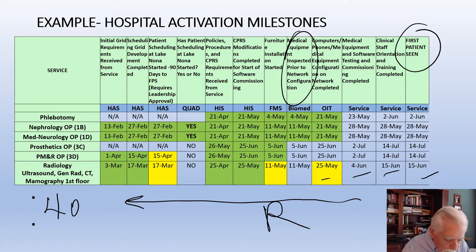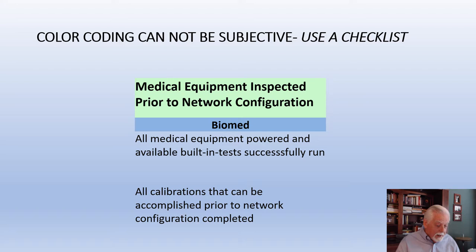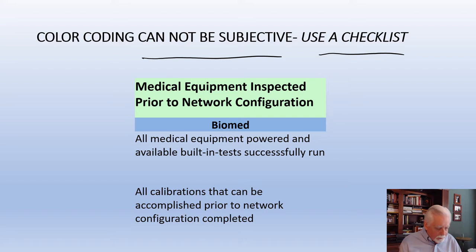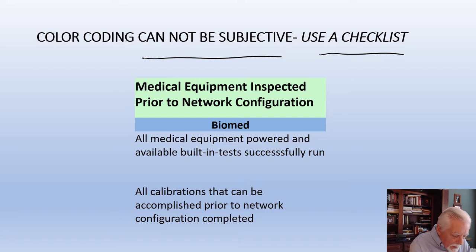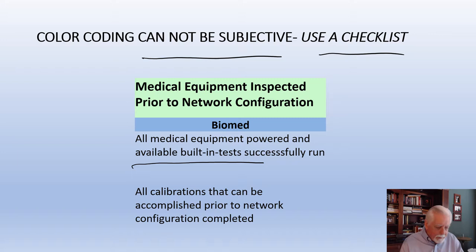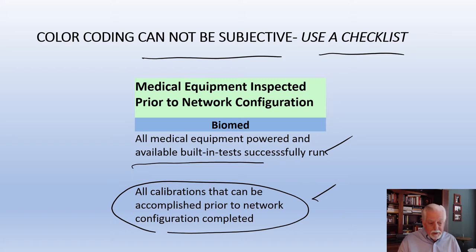If you're going to use a metric like this — whether milestones or actual data values — you must have a clear definition of what makes a field red, yellow, or green. It cannot be subjective. For example, for medical equipment inspected prior to network configuration, we used a checklist: all medical equipment must be powered and all built-in tests successfully run, and all calibrations that can be accomplished prior to network configuration must be complete. If not done by the date, it's yellow; if the date has passed, it's red.